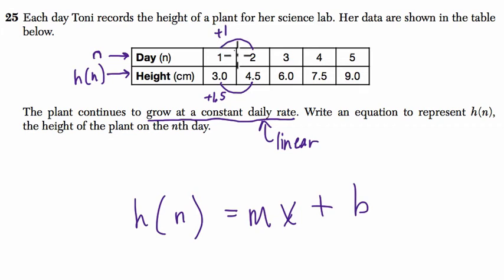So our slope is one and a half divided by one, which is just one and a half. So it's one and a half x plus something. That's h of n.